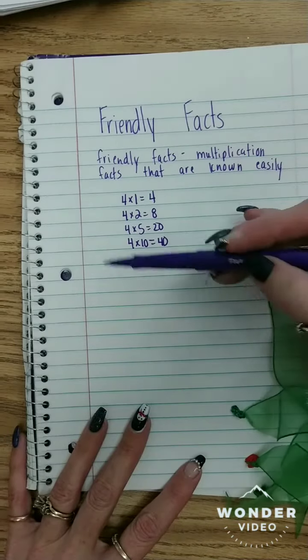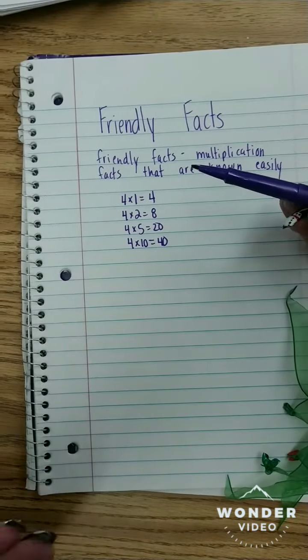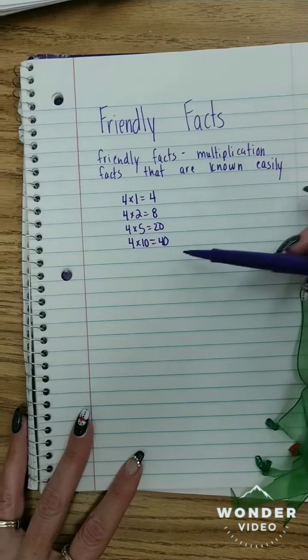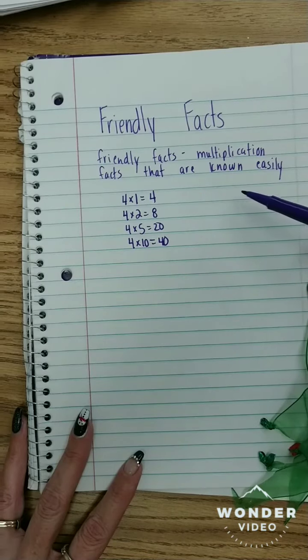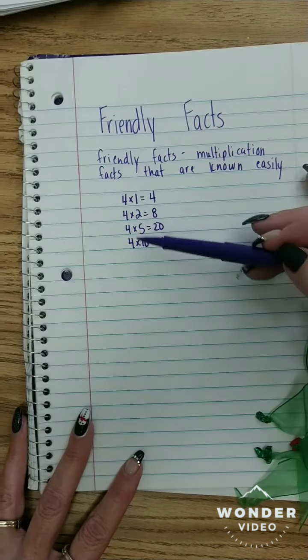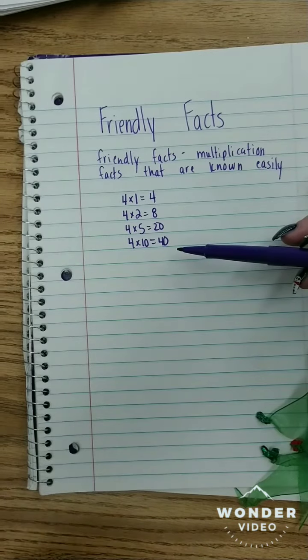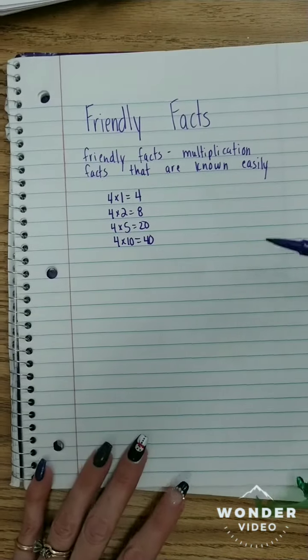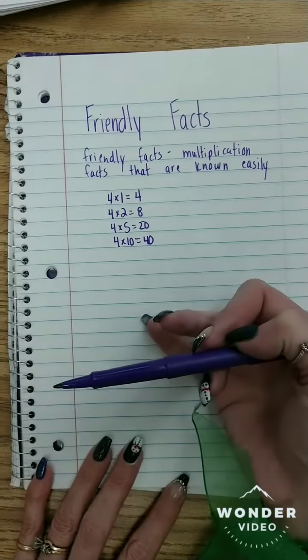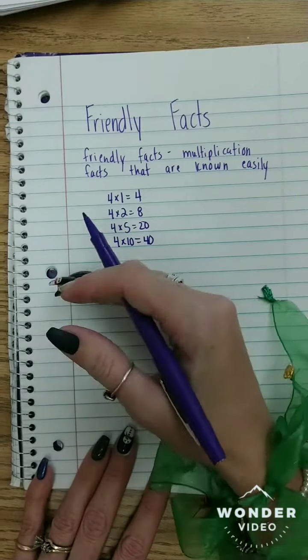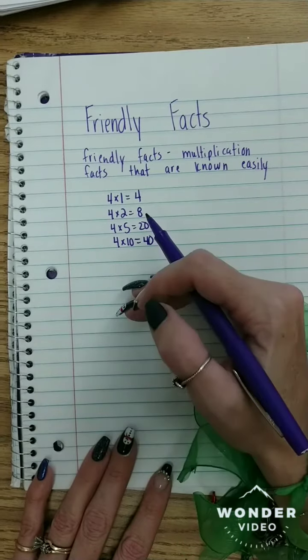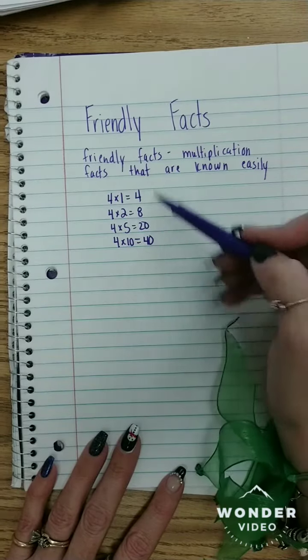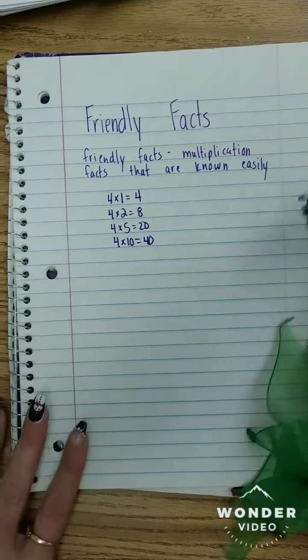Now some students may have a bigger arsenal of friendly facts, like they may know their doubles or they may know their nines tables. So your friendly facts are facts that are known easily to you or they're easy to compute. We don't want kids trying to figure out each multiplication fact. That's what we did yesterday. This is a strategy that actually is really helpful for those students who aren't familiar with their facts, and it helps them still be able to actually divide only knowing a few facts and the multiples of those facts.